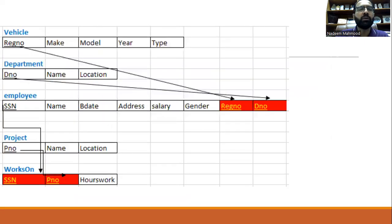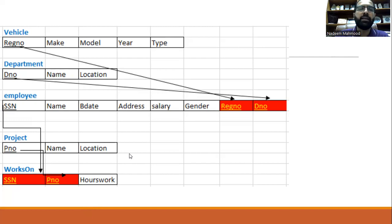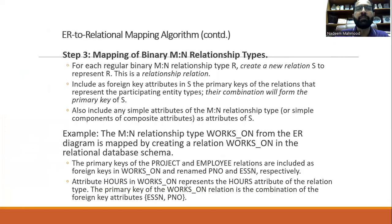The solution is to create a third table called 'works on.' We take the keys of both participating relations: SSN from employee and PNO (project number) from project, and put both into this table. Together they form the primary key of the works-on table. SSN becomes a foreign key referencing employee, and PNO becomes a foreign key referencing project. The attribute 'hours,' which cannot be defined in either relation, is added here. This is the representation of one-to-one, one-to-many, and many-to-many relationships. Thank you.